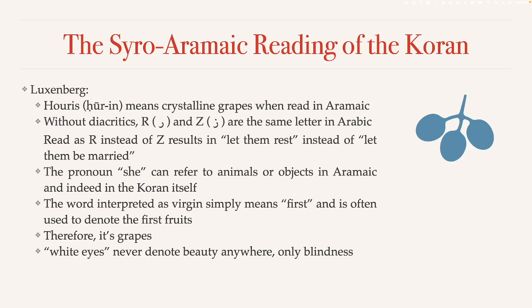Where Luxenberg differs with the traditional interpretation is the 'in' part. In Arabic, 'in' means eyes, but in Aramaic it can also mean crystalline. Even in Arabic, you can say 'the eye of somebody' to mean that person's esteem — so the definition of crystalline for 'in' doesn't exist in Arabic anymore, but we can still see its remnants. In Aramaic it was still somewhat common at that time. This is one element of Luxenberg's approach: looking for Aramaic meanings for words.